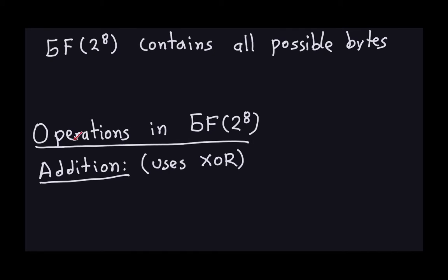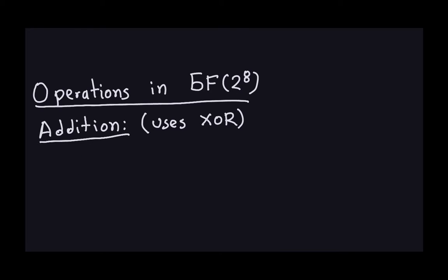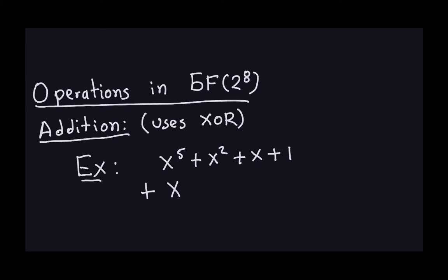So what operations are in the Galois field? There are two: addition and multiplication. Addition of polynomials adds the coefficients using XOR addition. For example, let's take two polynomials in the Galois field: x to the fifth plus x squared plus x plus one, which is an element of this collection since all coefficients are either zeros or ones, and we want to add to it x to the fourth plus x squared plus x.